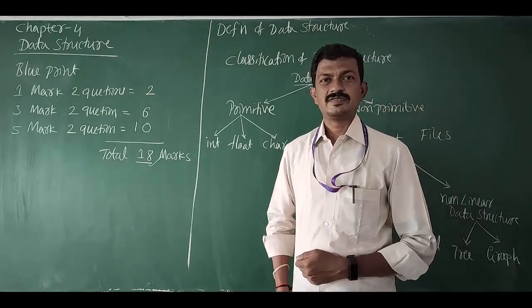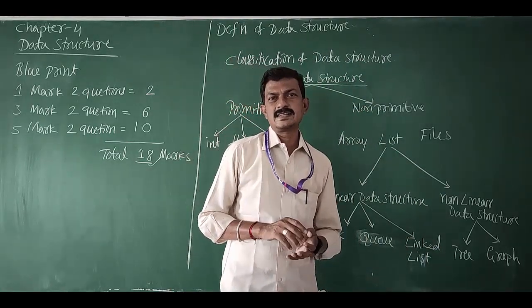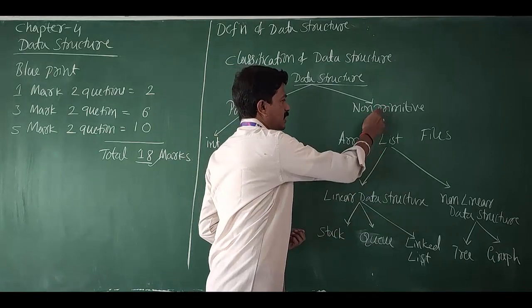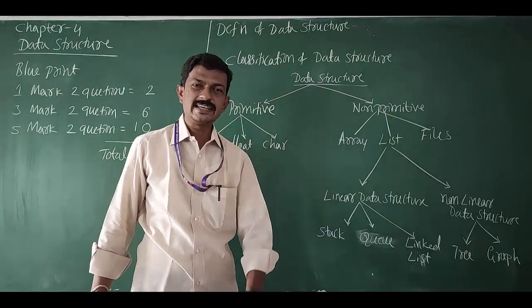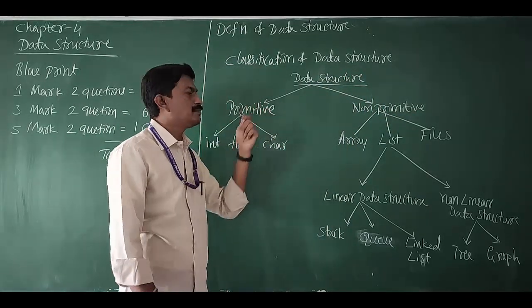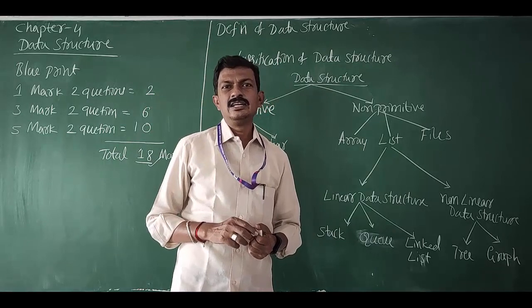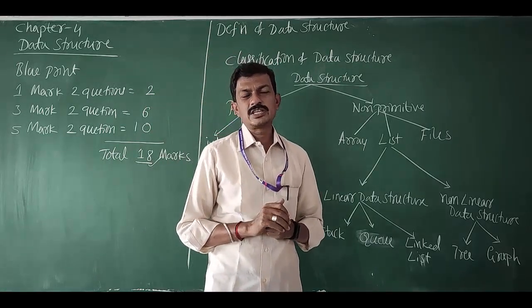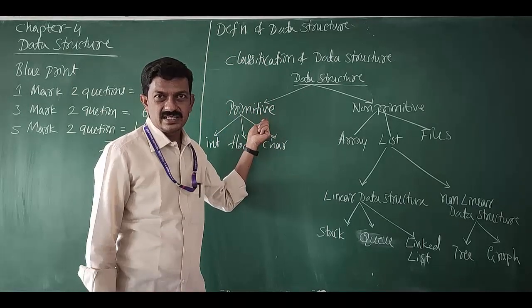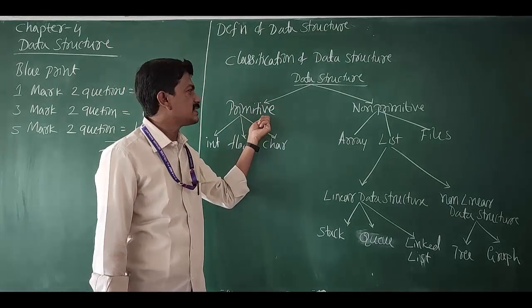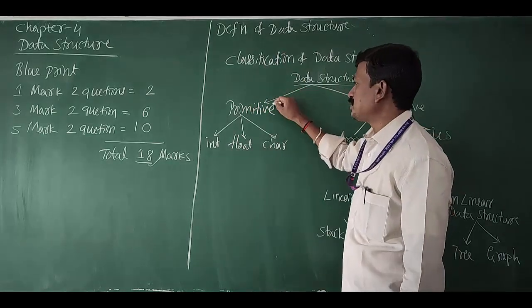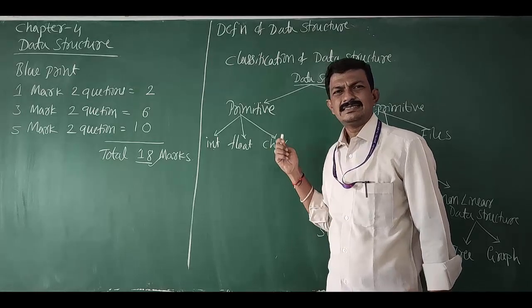Data structures are classified into two categories: primitive data structure and non-primitive data structure. Primitive data structures are the fundamental data structures which can be directly manipulated using machine level instructions. Examples for primitive data structures are integer, float, character, double, etc.